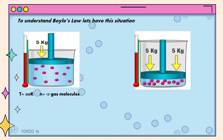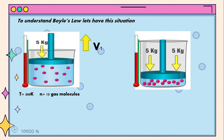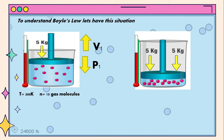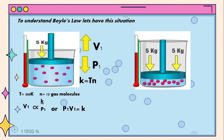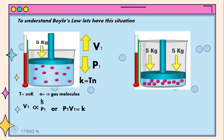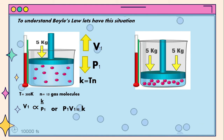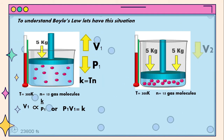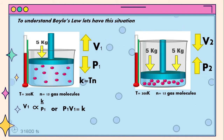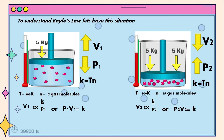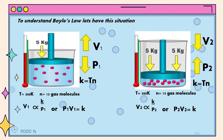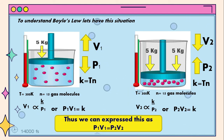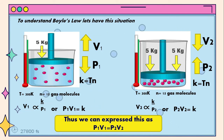To understand Boyle's Law, let's have this situation. From the initial setup, the initial volume increases as the initial pressure decreases at a constant temperature, or simply, the initial volume is inversely proportional to initial pressure. We can write it as P1V1 equals K. While in the final setup, the volume decreases as the pressure inside increases at a constant temperature, written as P2V2 equals K. Thus, we can express this as P1V1 equals P2V2. This is the general formula of Boyle's Law.